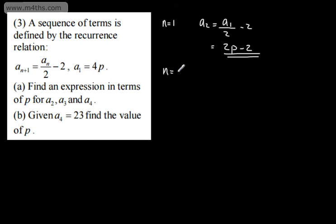If we consider when n is equal to 2, substituting in we're going to have a3 is going to be equal to a2 divided by 2, then we're going to subtract 2. So that's going to be 2p divided by 2, which is going to be p minus 1 minus another 2, so that is going to give us now p minus 3.